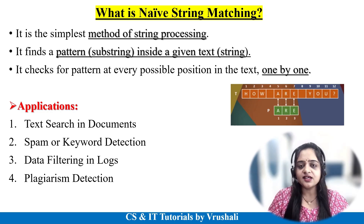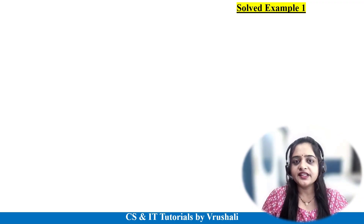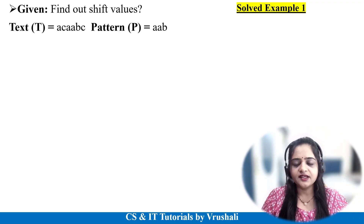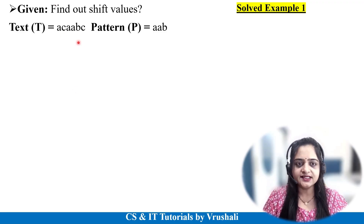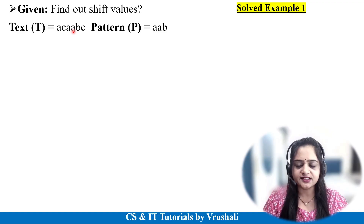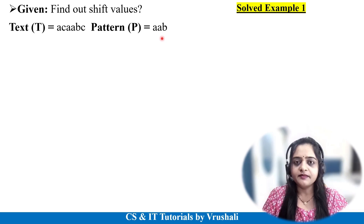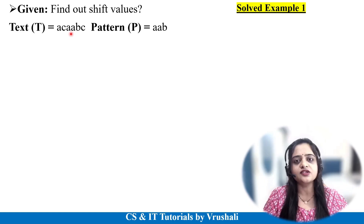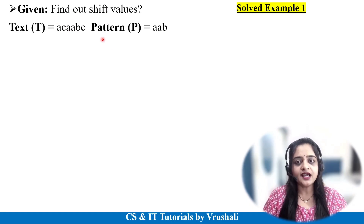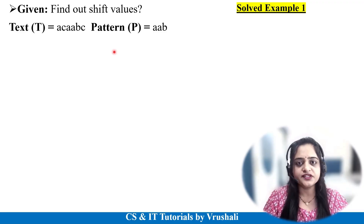Now let's understand this algorithm with examples. In your university exam they ask questions like this: text T is given as ACAABC, and you have to find out the pattern P = AAB — meaning, you have to determine whether the pattern AAB is present in the given text or not. You have to find the valid shift values. Let's see how to solve this using the naive string matching algorithm.